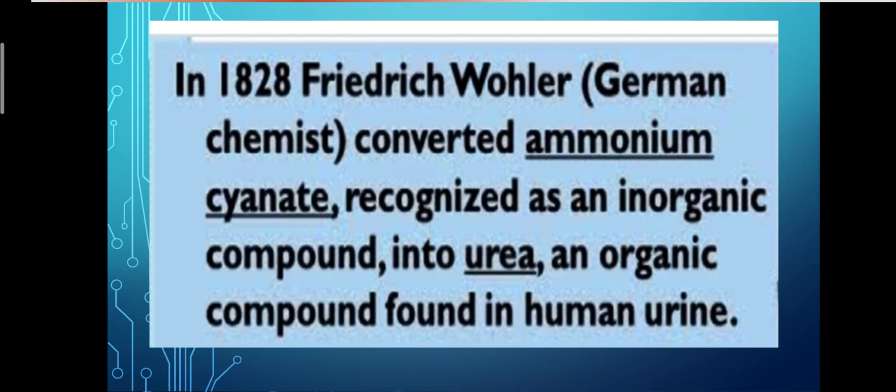In 1828, Friedrich Wöhler, a German chemist, converted ammonium cyanide, recognized as an inorganic compound, into urea, an organic compound found in human urine.